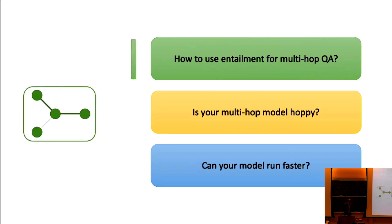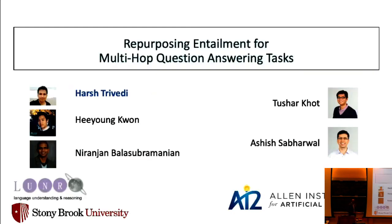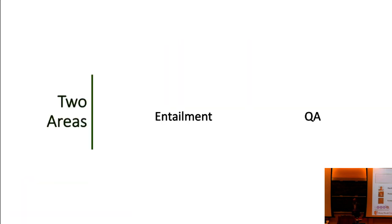I'll start with the first question. This is work presented at NAACL this year, led by my student Harsh Trivedi, along with Heeyoung Kwon, and folks from AI2 — Tushar Khot and Ashish Sabharwal. This work began by asking: we have these two big problem spaces in NLP — one is entailment or natural language inference, and the other is QA.